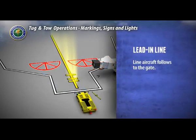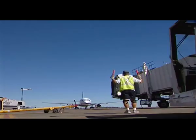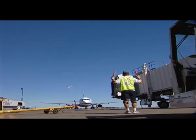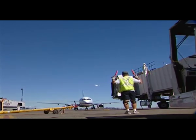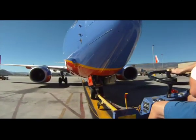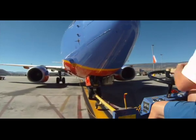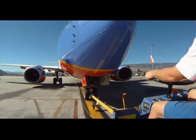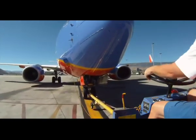The lead-in line is the line that the aircraft follows to the gate. This line is yellow with a black outline. The ground marshal will direct the aircraft so that its nose wheels straddle the center of this line. When towing an aircraft out of the ramp, the tug operator should also use this line as a general guide.